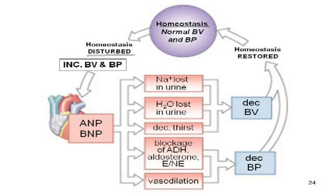So we're minding our own business and the teacher says pop quiz. Our blood pressure goes up, and so our heart and brain release the natriuretic peptides. We pee out sodium, we pee out water, we don't drink, we don't release all those other hormones, we dilate our blood vessels, and all of that brings the blood pressure back down.